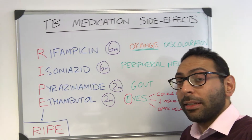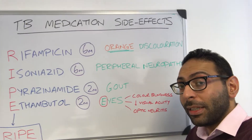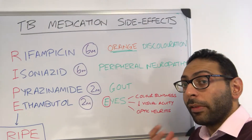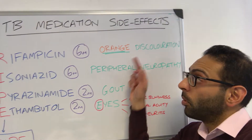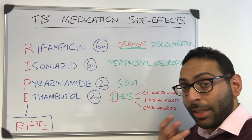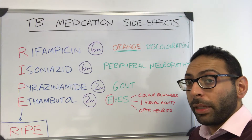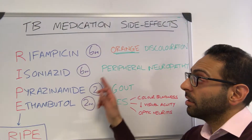When you think about the key side effects, remember for Rifampicin the key thing is the orange discolouration of bodily fluids — things like sweat, things like urine, things like tears can all become orange or red stained.